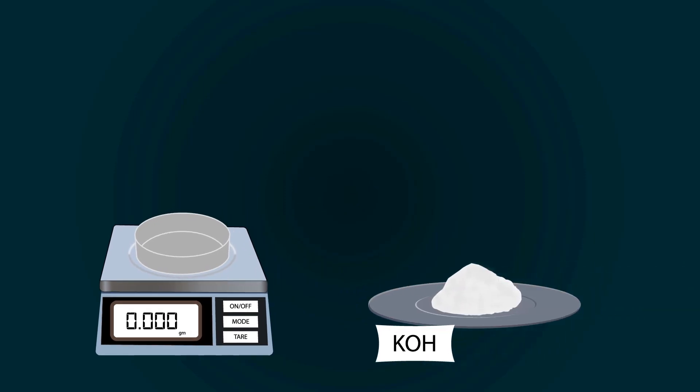Now start adding potassium hydroxide into the petri dish with the help of a spatula. Weigh precisely up to 20 grams.